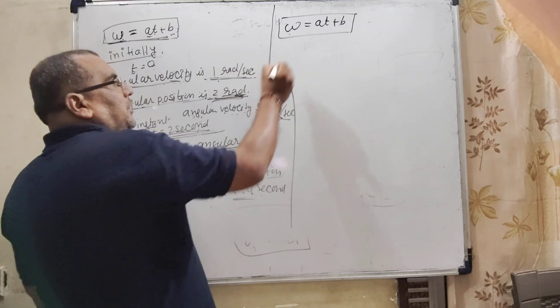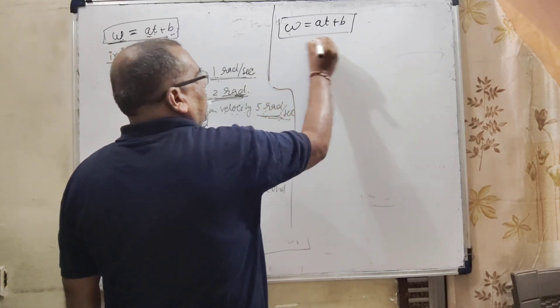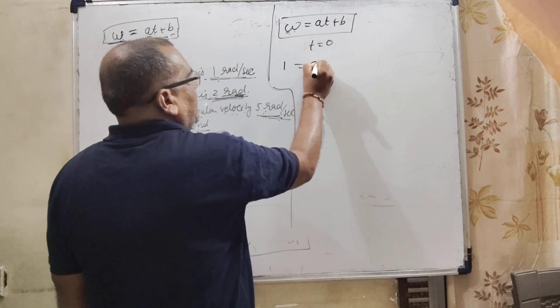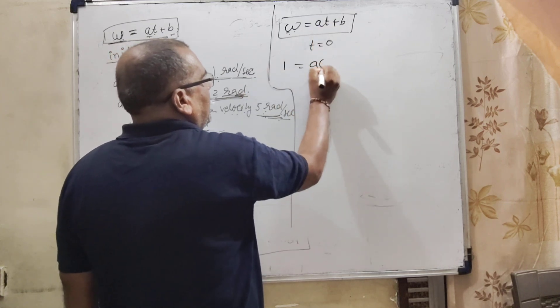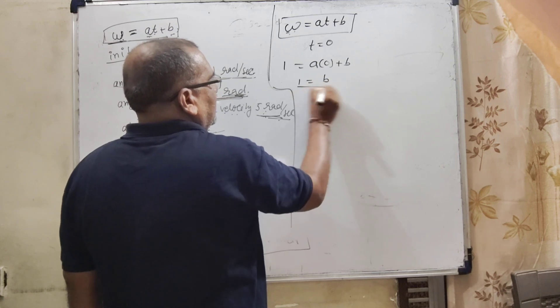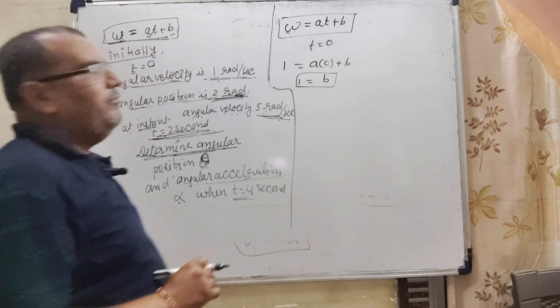Initially, t equal to 0. Angular velocity is given 1 radian. So here a times t is 0, plus b. So 1 equal to b. We get the value of b.